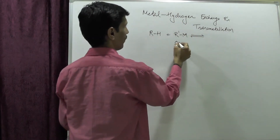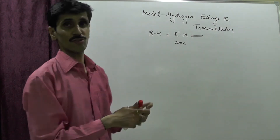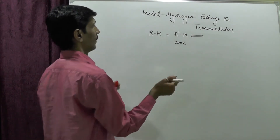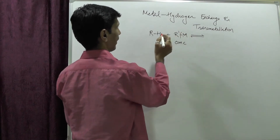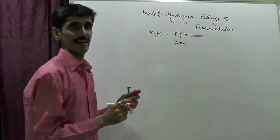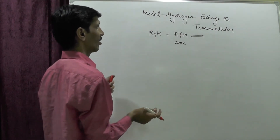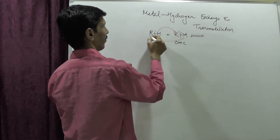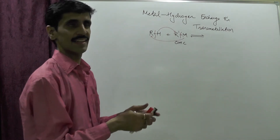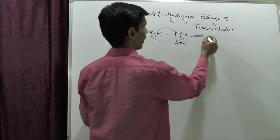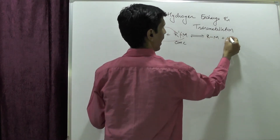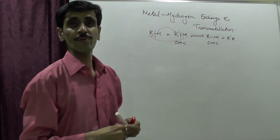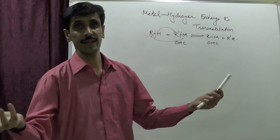I'm going to show you the bond formation and bond breaking so you can predict the products very fast. The bond between R-M breaks, and of course the bond in RH also breaks. There is an exchange taking place — H goes with R' and M goes with R. As a result, you get two products: R'M and R'H, where R'M is our new organometallic compound. So from one organometallic compound we prepare another organometallic compound.